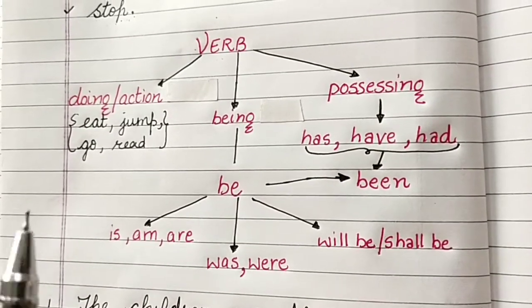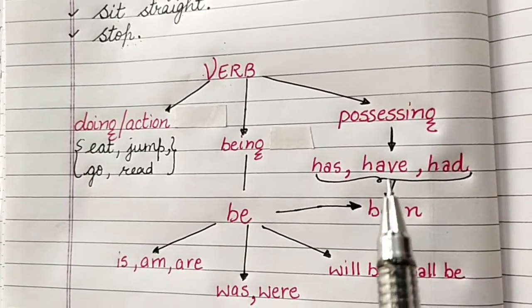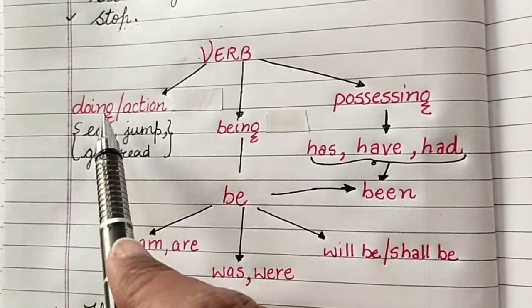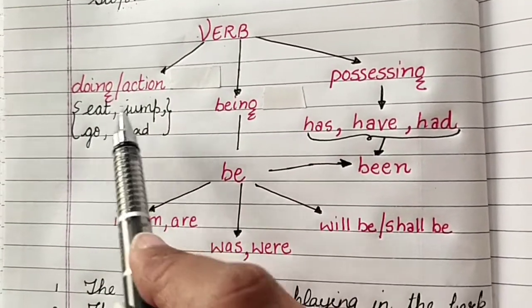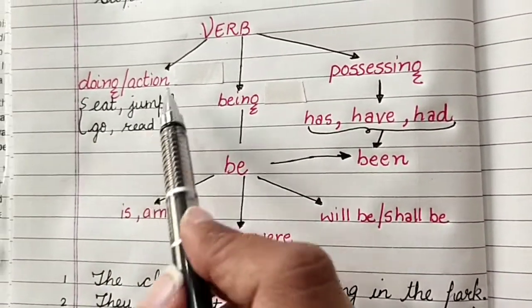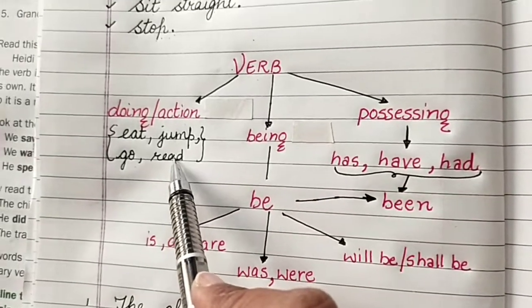When we talk of verb, verb could be of different types. It could denote doing or action. Like eat, jump, go, read. These are all action words.